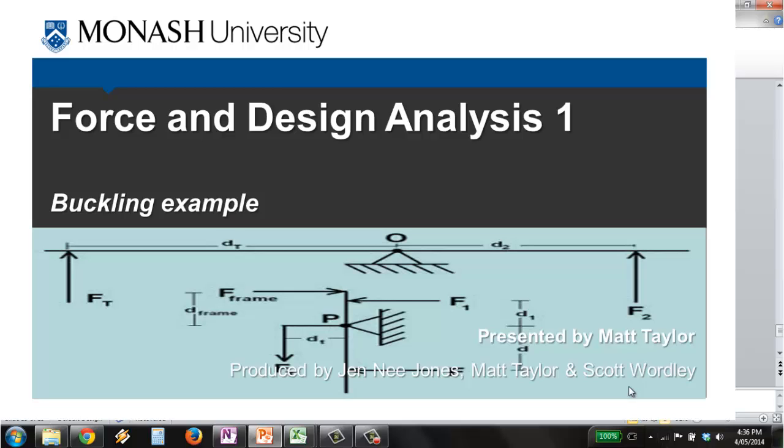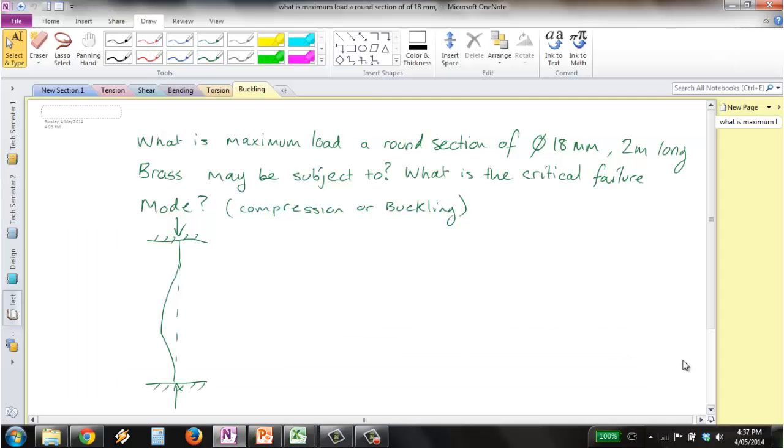This is the final example on buckling. We want to find the maximum load that can be applied to a round section of diameter 18mm and 2m long. The section is made from brass and we want to check for two different failure modes: compression and buckling. We need to determine which mode is the critical failure.